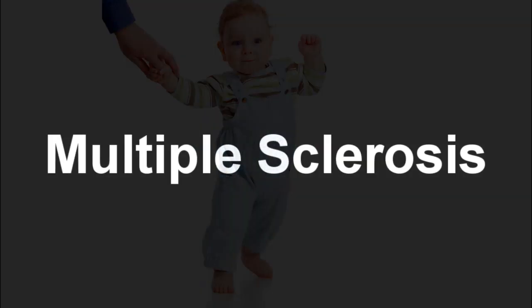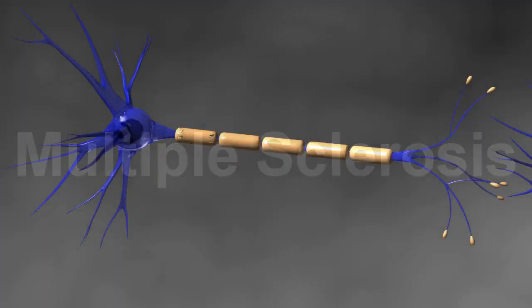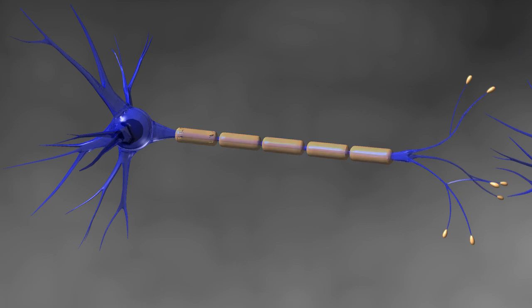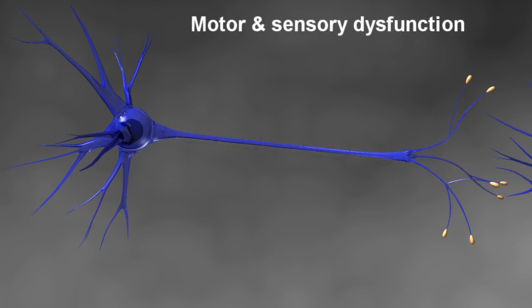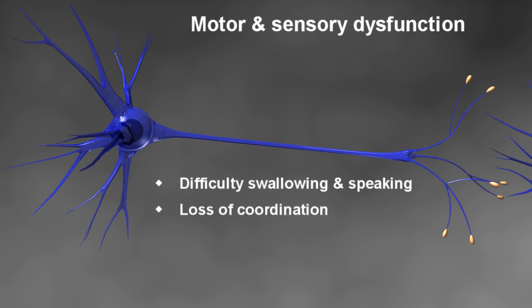Similarly, disease processes such as multiple sclerosis can damage the myelin sheath, leading to the characteristic features of that disease including motor and sensory dysfunction like difficulty swallowing or speaking, ataxia or loss of coordination, blindness and mood disorders including depression.